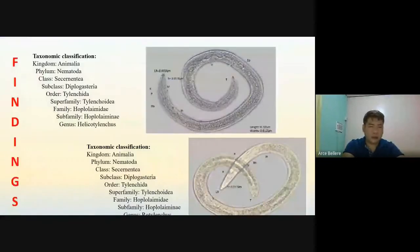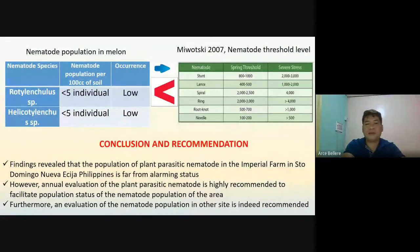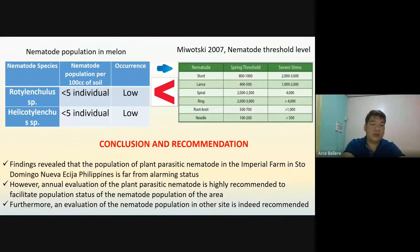The findings reveal that there are two kinds of plant parasitic nematodes present in the area: Helicotylenchus and Rotylenchus. The different population in melon is far from the alarming threshold level based on Meosky 2007, because the nematode population per 100 cc of soil of Rotylenchus and Helicotylenchus is less than five individuals. So occurrence of these is low.